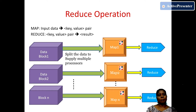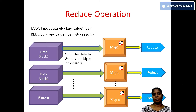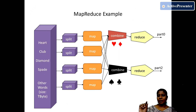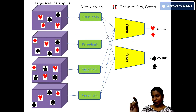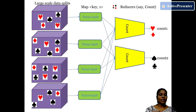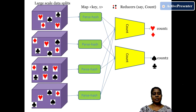The input to the reducer comes from the mapper. How many mappers and reducers you want depends on the application — the programmer can decide. In the card game example, each node finds the number of cards in heart, spade, etc. That count is given to the reducer: the first reducer contains the count of heart and diamond, and the second reducer contains the count of spade and club.